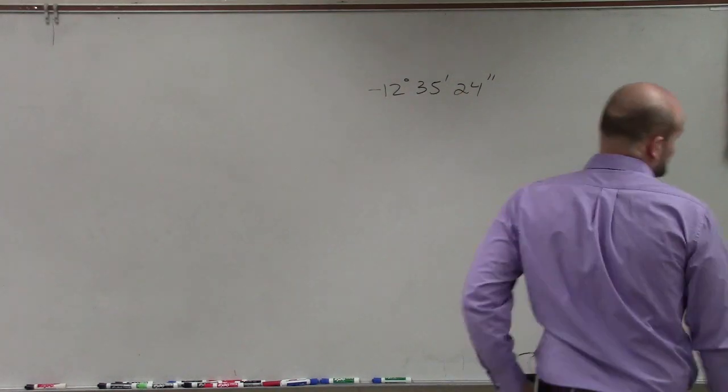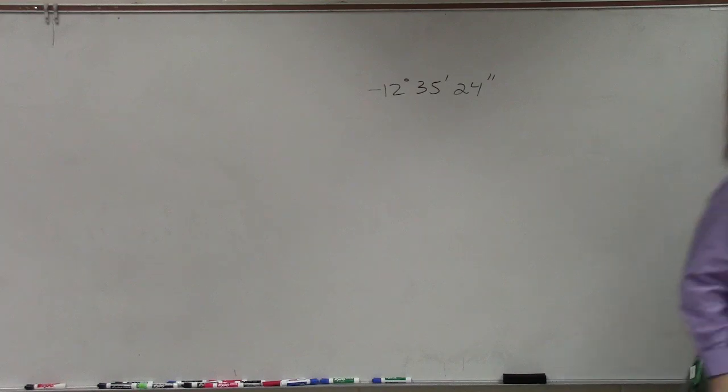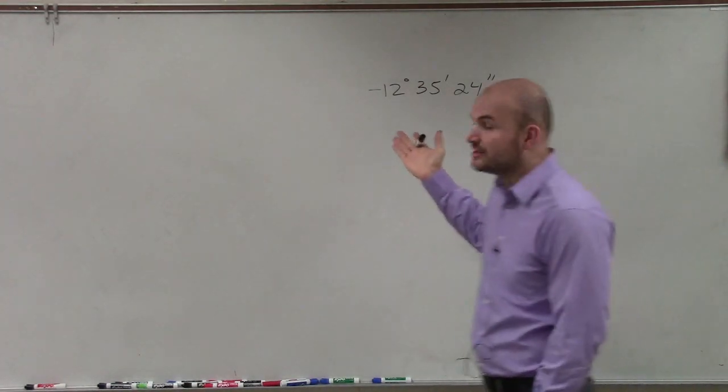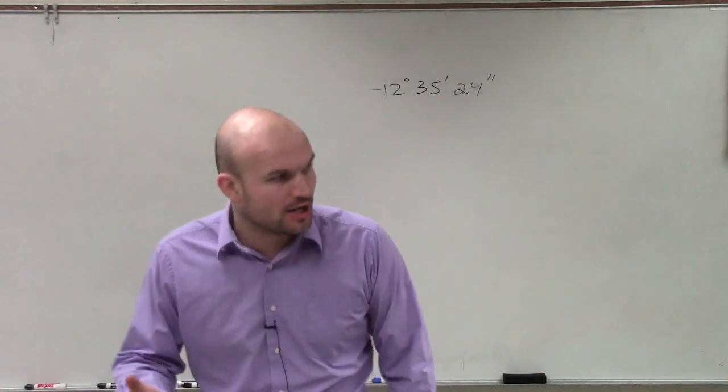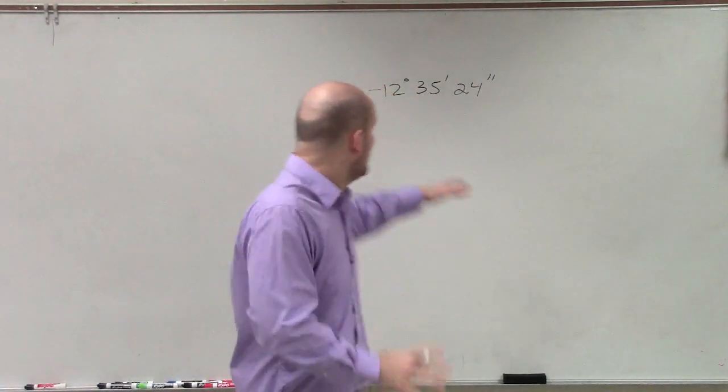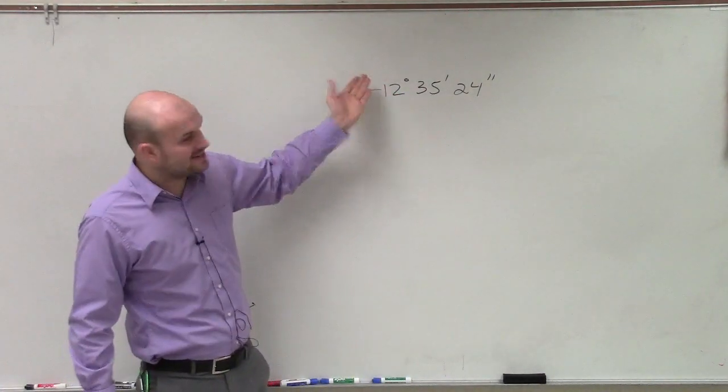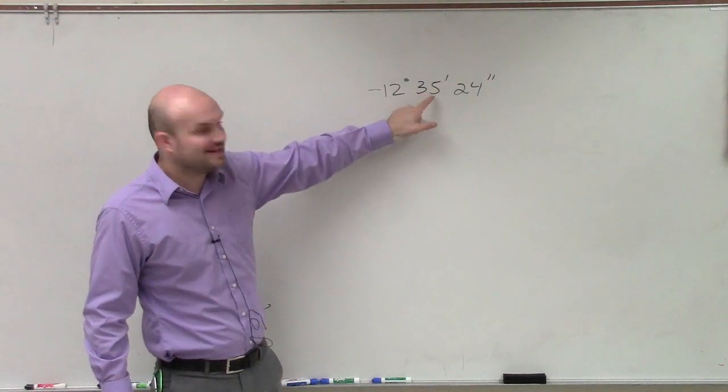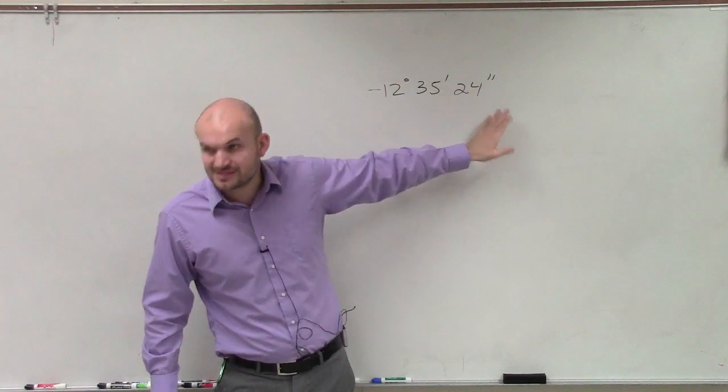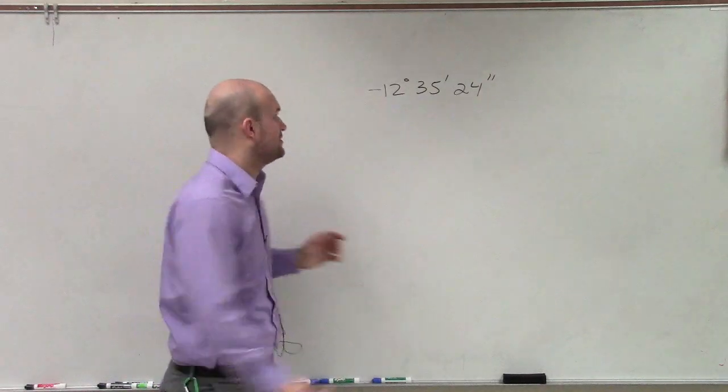So on this problem, what they're asking us to do is convert this to decimal form. You guys can see this is not in a decimal answer. But this is one way that we break apart our degrees to section them off, where it's negative 12 degrees, and then it's 35 minutes and 24 seconds. But we need to convert this into a decimal.